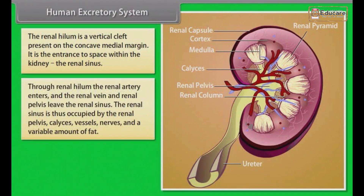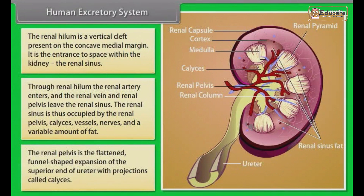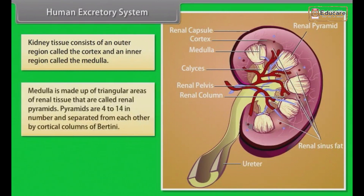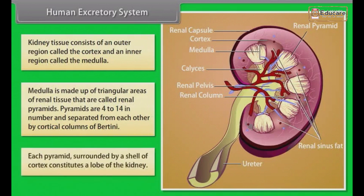Through the renal hilum, the renal artery enters and the renal vein and renal pelvis leave the renal sinus. The renal sinus is occupied by the renal pelvis, calyces, vessels, nerves and a variable amount of fat. The renal pelvis is the flattened, funnel-shaped expansion of the superior end of the ureter with projections called calyces. Kidney tissue consists of an outer region called the cortex and an inner region called the medulla. The medulla is made up of triangular areas called renal pyramids, which are 4 to 14 in number, separated by cortical columns of Bertin. Each pyramid surrounded by cortex constitutes a lobe of the kidney.